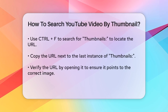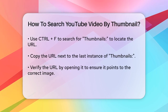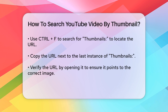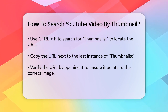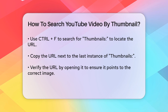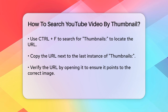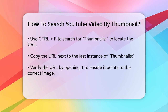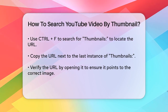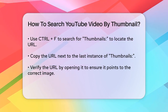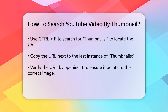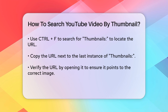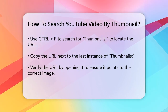Finding the thumbnail URL: to use the above method, you first need to find the URL of the thumbnail. Here's how. One: open the YouTube video page. Two: right-click on the screen outside the video and select 'View page source.' Press Ctrl+F and type 'thumbnails' in the search bar. Find the last highlighted instance of 'thumbnails' and copy the URL next to it. Four: verify the URL by right-clicking on it and opening it to ensure it's the correct thumbnail image.